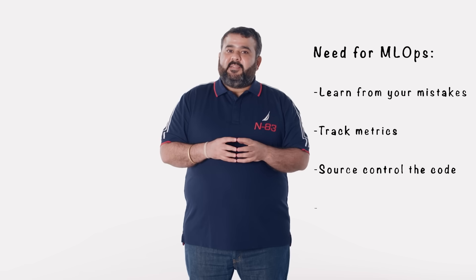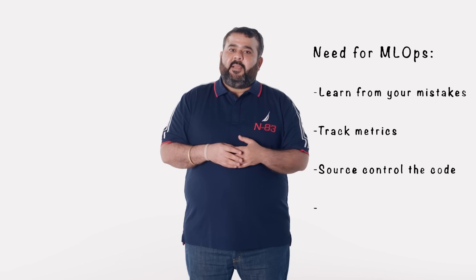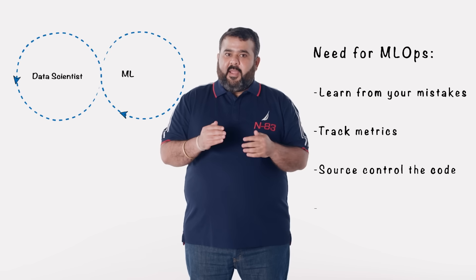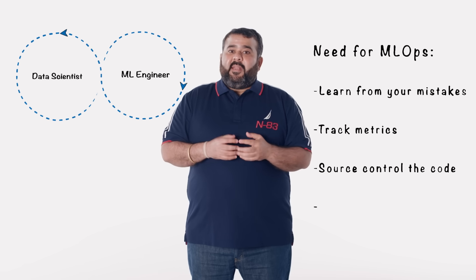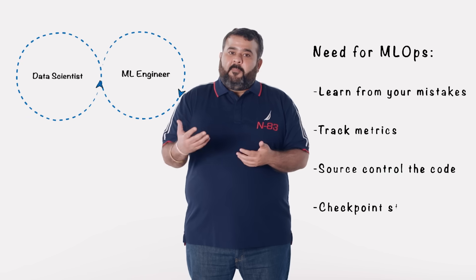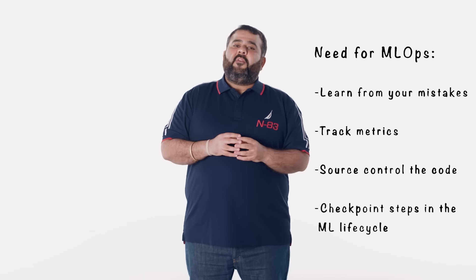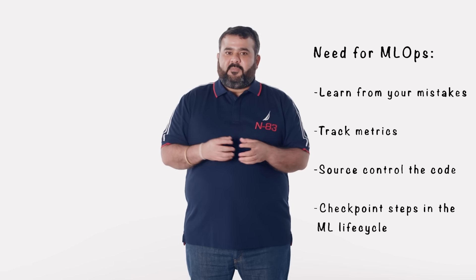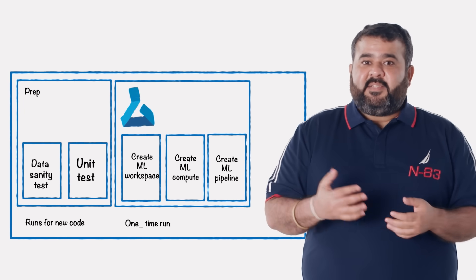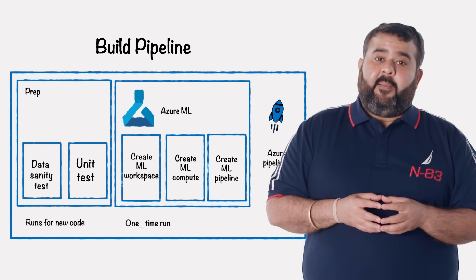In addition, since all this experimentation requires some amount of code to be written, there is also the need to source control this code, its environment, and any other dependencies for reproducibility purposes. Also, in most cases, as data scientists iterate upon these steps, a lot of the sub-steps remain the same and don't need to be run again. MLOps can ensure that by enabling the use of concepts like ML pipelines — you can essentially checkpoint these sub-steps to only run if something warrants a change. All these tasks, from experimentation to optimization, are contained in the build pipeline as part of MLOps.